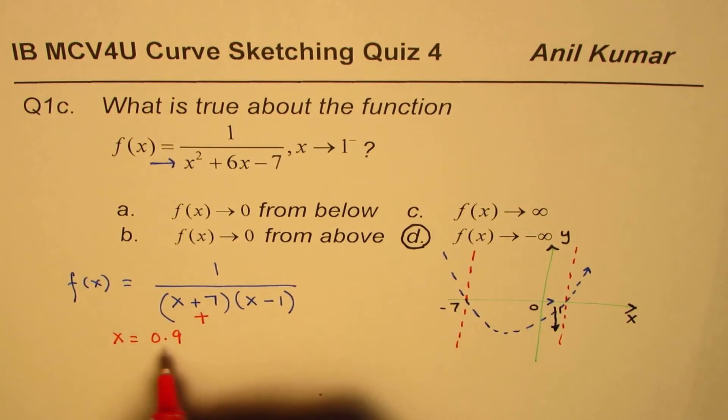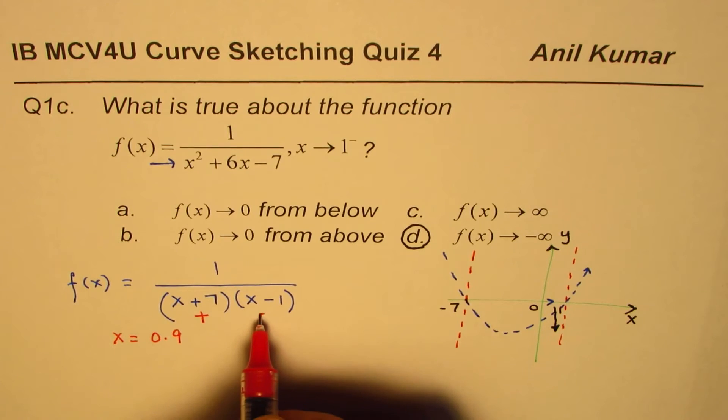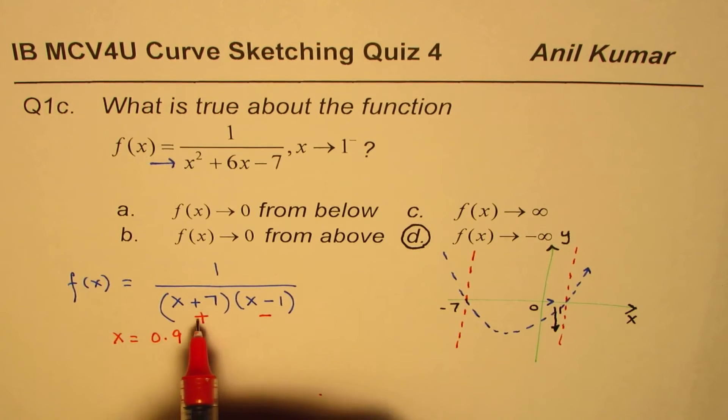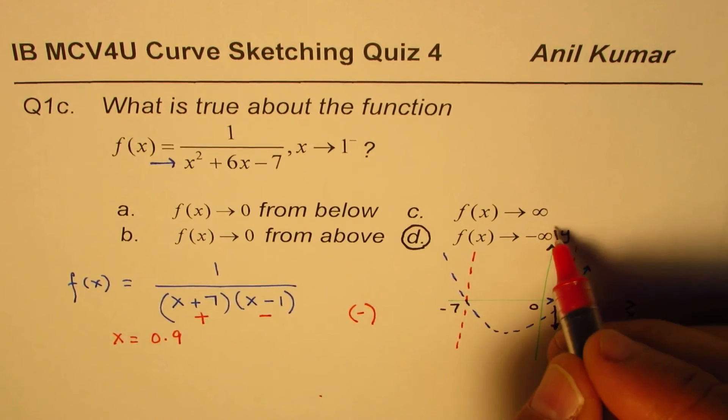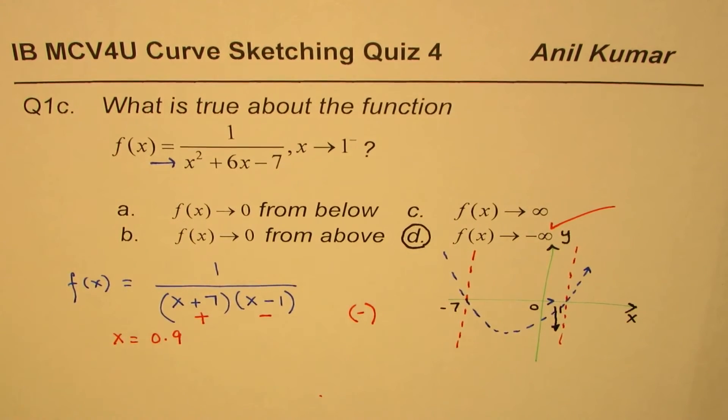This part is going to be, since it is 0.9 minus 1, negative. So, when you multiply positive and negative, what do you get? You get negative. And, therefore, the option is f(x) is approaching negative infinity.